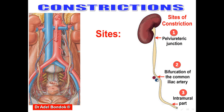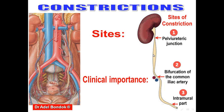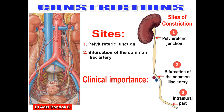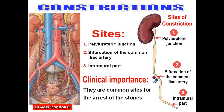Constrictions of the ureter: the ureter has three constrictions. The first is at the pelviureteric junction. The second is where it crosses the bifurcation of the common iliac artery. The third is the intramural part, inside the wall of the urinary bladder. These constrictions are clinically important as they are common sites for the arrest of kidney stones.